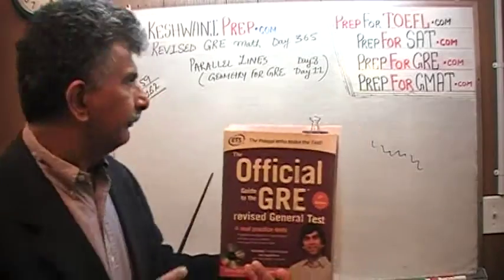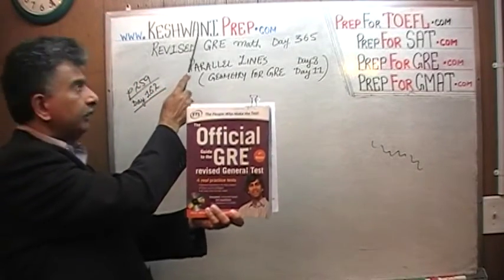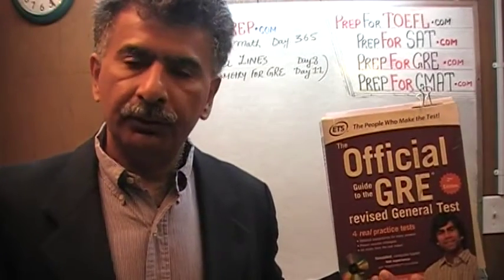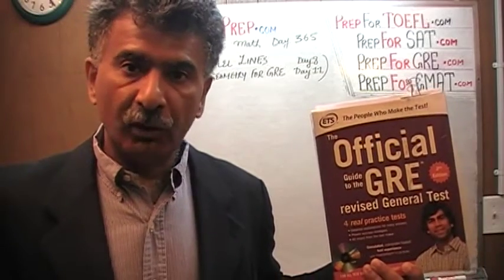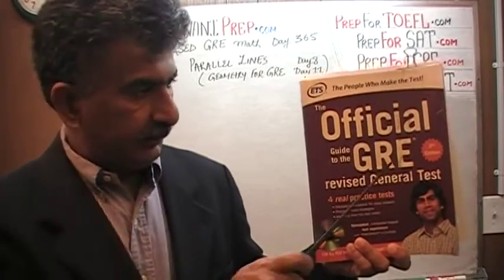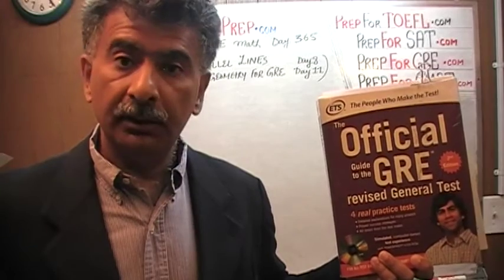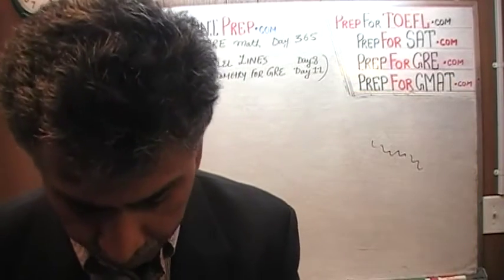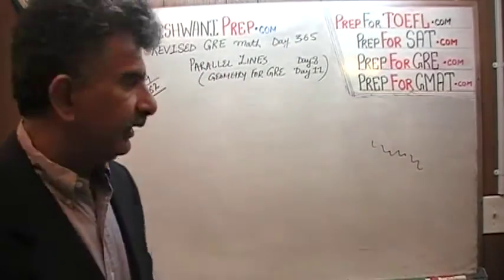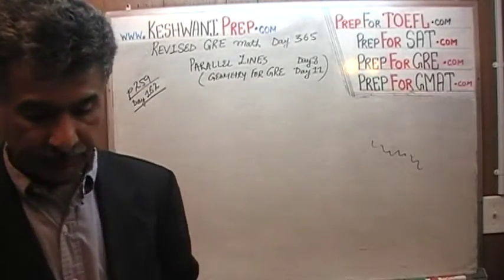Hello, my name is Keshwani, K-E-S-H-W-A-N-I. We are here because we want to prepare for GRE. We have been solving GRE math problems out of this book, the Official Guide to the Revised GRE, the second edition. If you do not own this book already, purchase one immediately — you are going to need it. The problems we are about to solve are on page 259. Today is our lesson number 365.